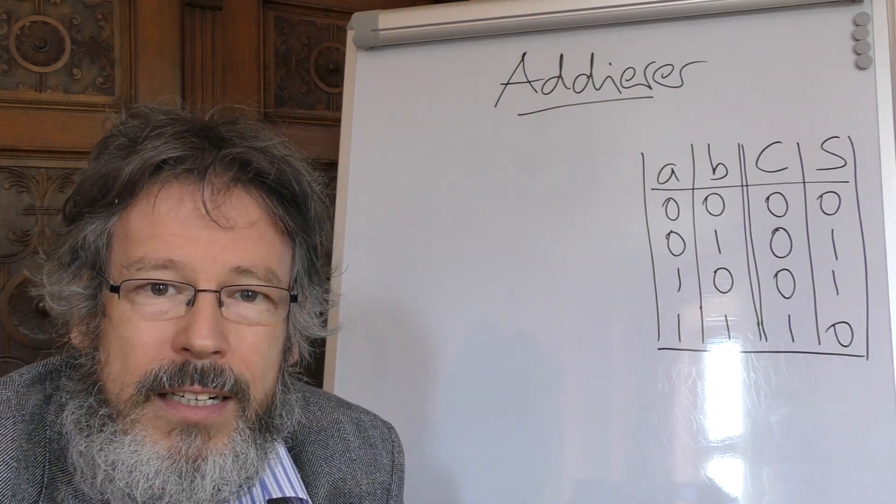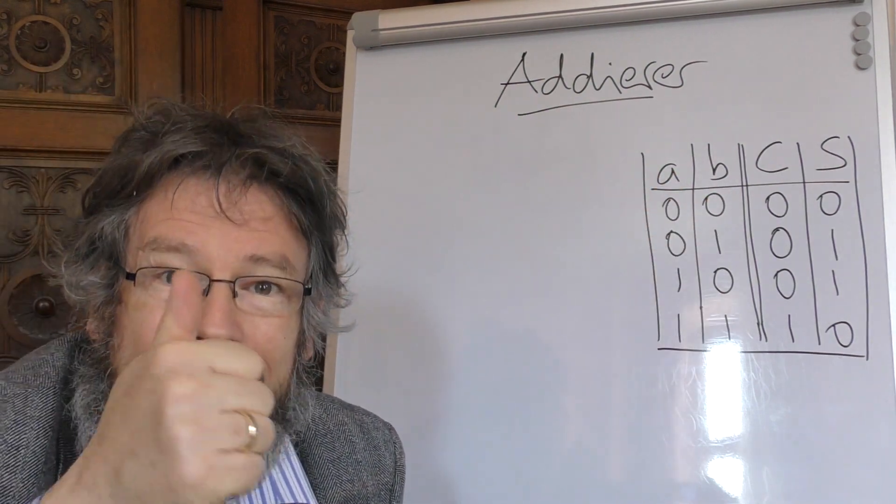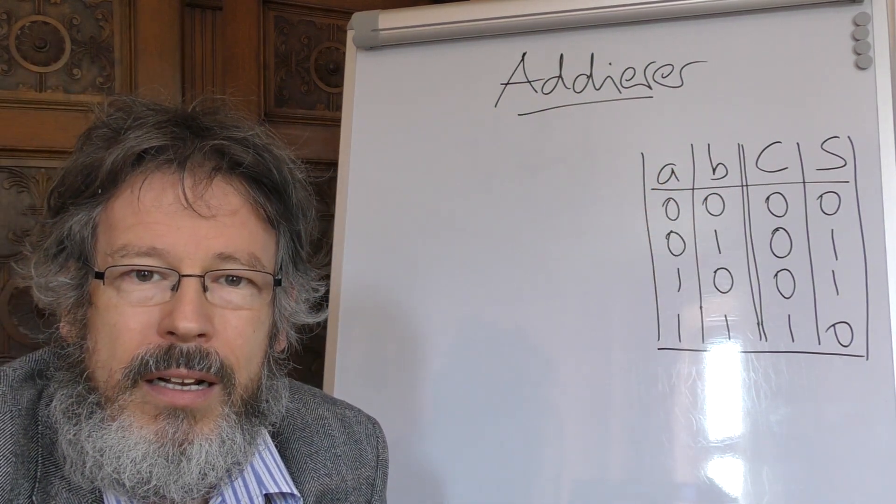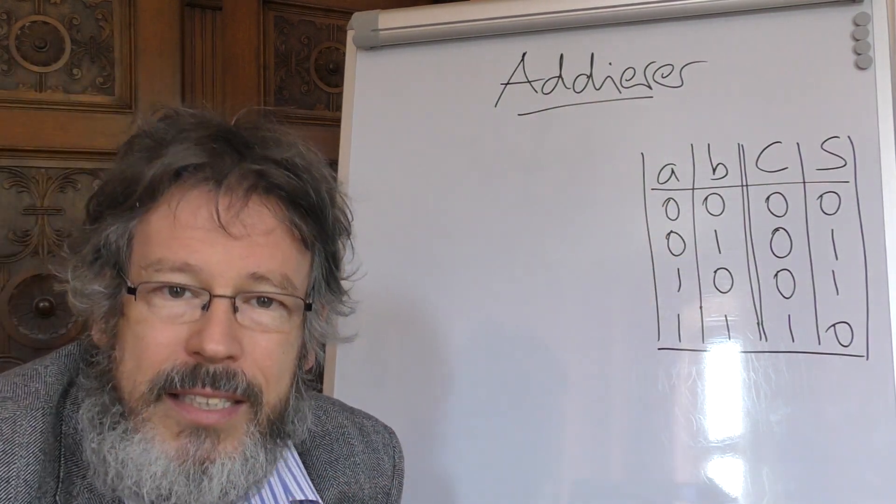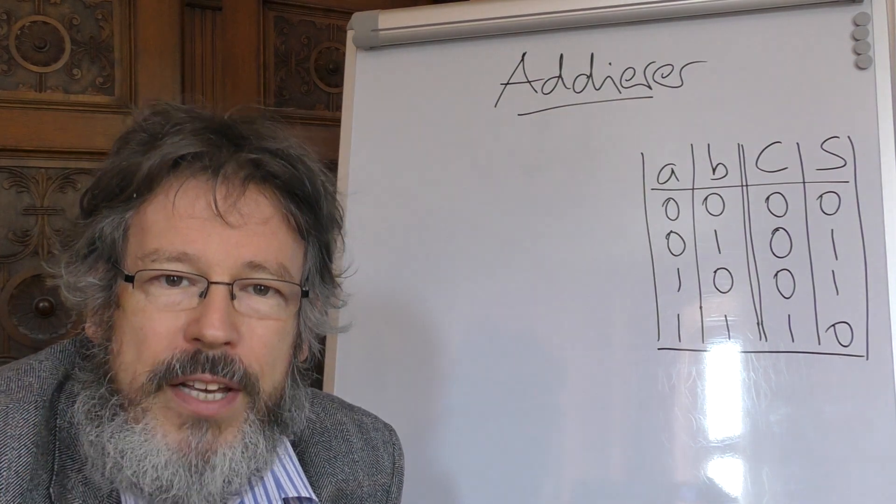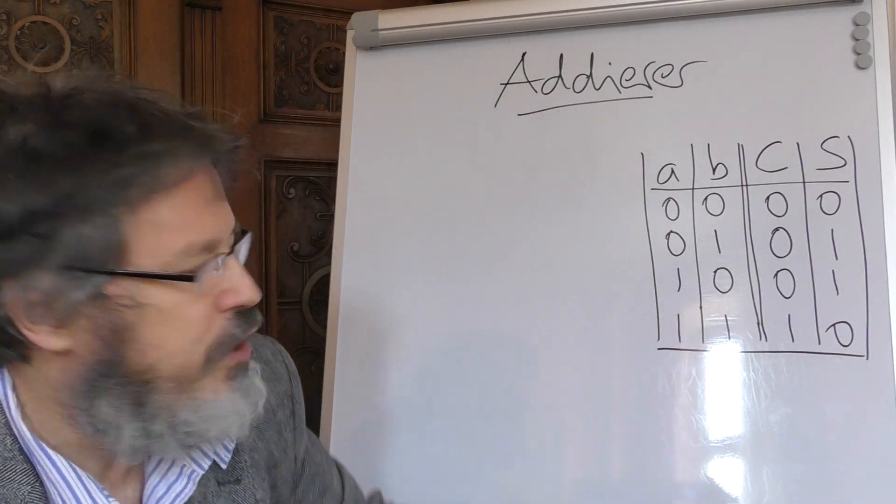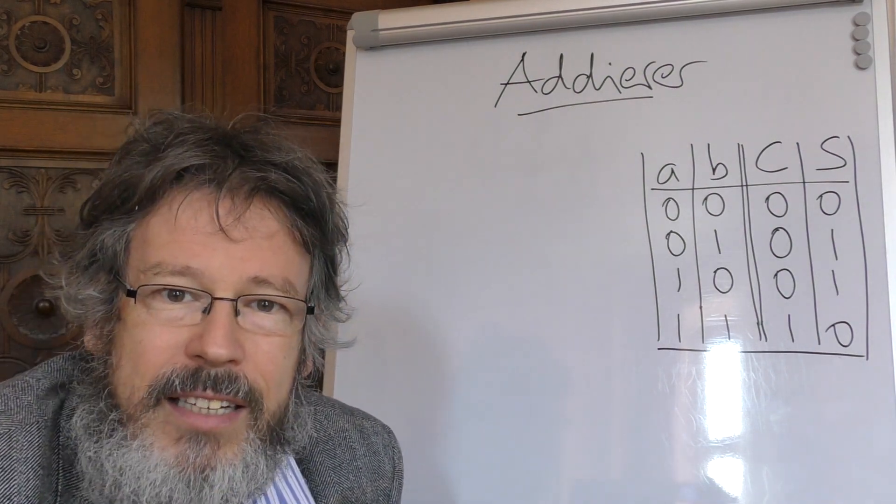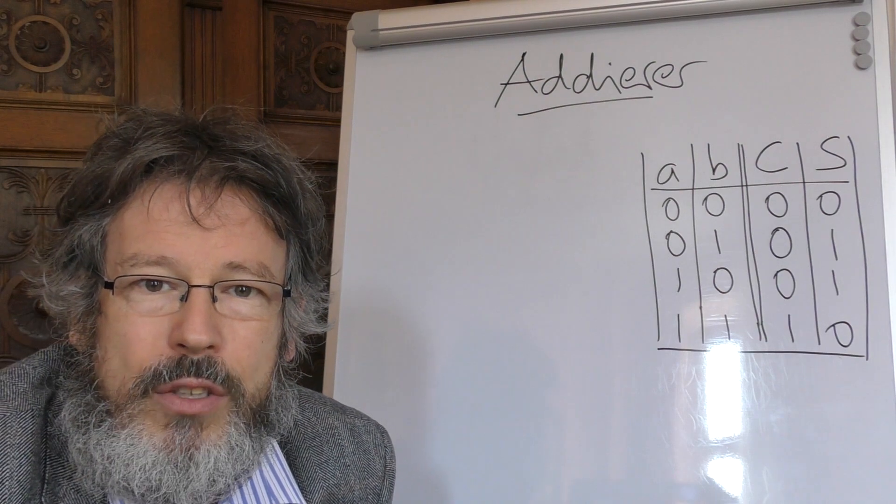Der einfachste Fall ist der, wenn beide Zahlen A und B Binärzahlen sind und nur eine Stelle haben. Dann gibt es für A und B jeweils zwei Möglichkeiten, 0 oder 1. Insgesamt also gibt es vier mögliche Fälle in dieser Addition. Die haben wir hier in dieser Tabelle aufgeschrieben. Und die erste Frage, die sich stellt, ist, reicht denn in diesem Fall auch ein Bit für das Ergebnis der Addition für die Summe?